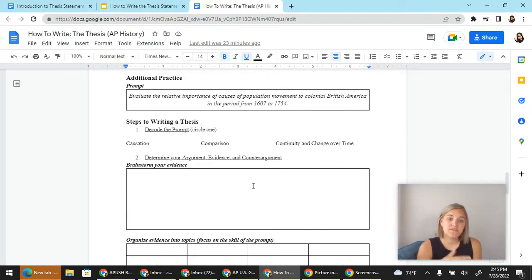Evaluate the relative importance of causes of population movement to colonial British America in the period from 1607 to 1754. Now again this content is covered in all three of the AP histories.